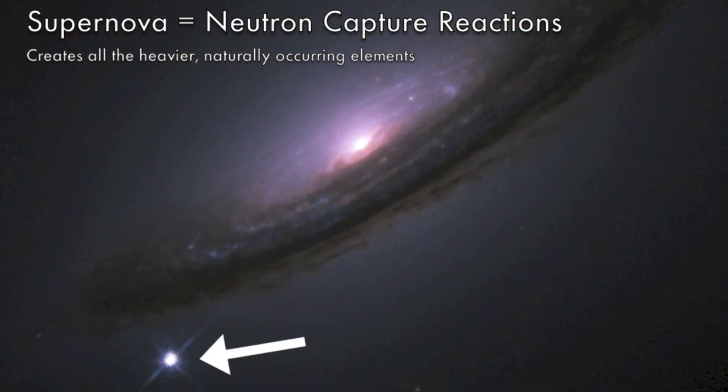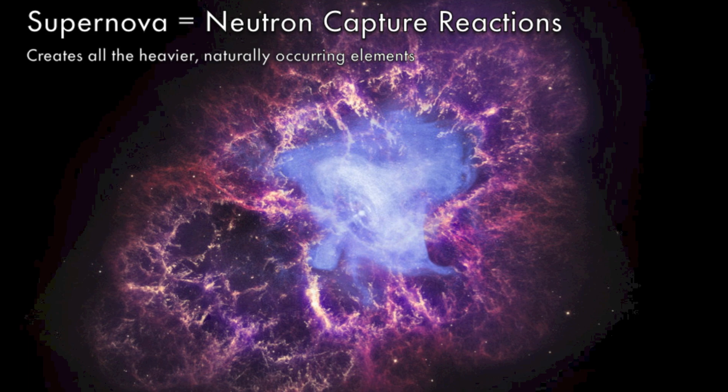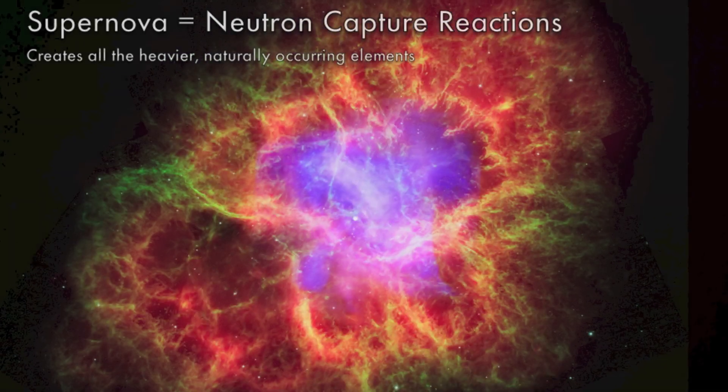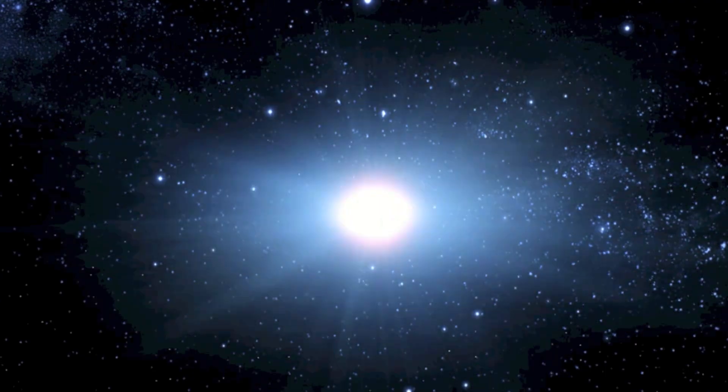The supernova acts as a delivery system for all of the created elements, scattering them throughout space, to be dispersed to other worlds. It's an amazing example of the circle of life on a cosmic scale, showing how a star's life cycle ends with sacrificing itself to spread life across the galaxies.